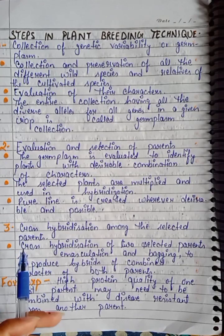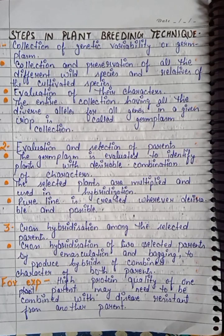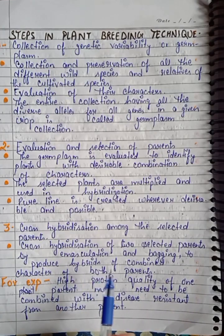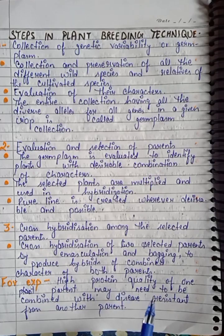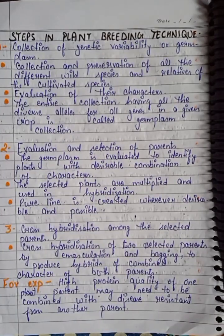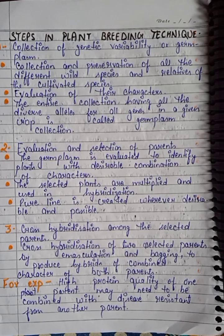The third step is cross hybridization among the selected parents. The parents we selected in step two undergo cross hybridization — cross hybridization of two selected parents by emasculation and bagging, to produce hybrids that combine characters of both parents. When we use a bisexual plant — where under one flower both androecium and gynoecium are present — we remove the stamen from the flower without damaging the female reproductive organs.